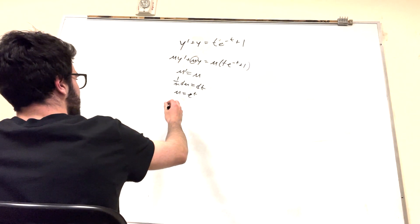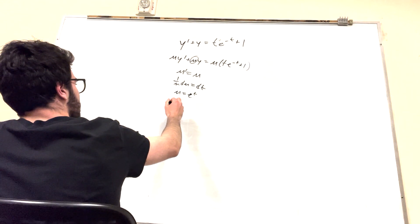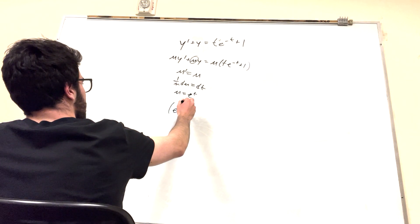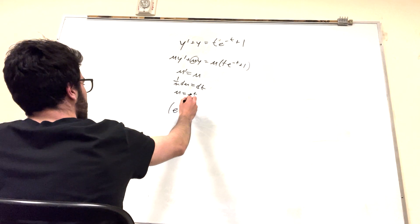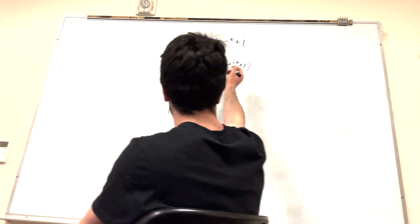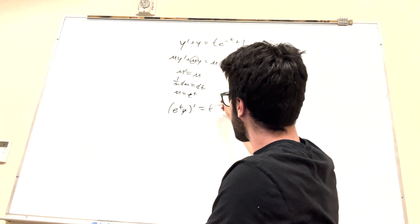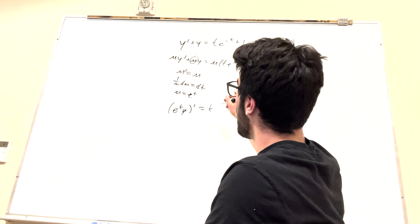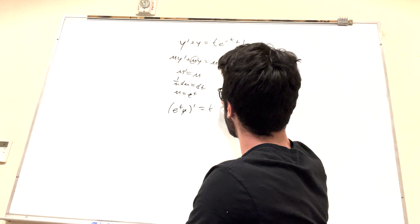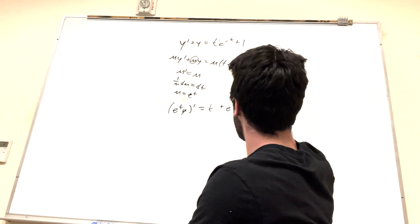So it's gonna be, what we can do now is we can factor this together using chain rule. So e to the t, e to the t, y, then prime is equal to, and then all of this e times e to the t, so that'll be t. E to the negative t times e to the t is just gonna be 1. And then plus e to the t, right?